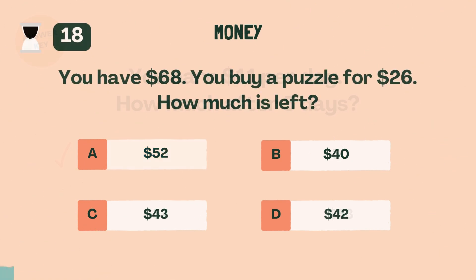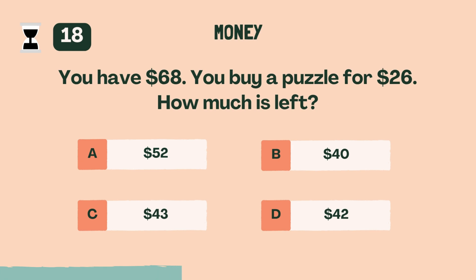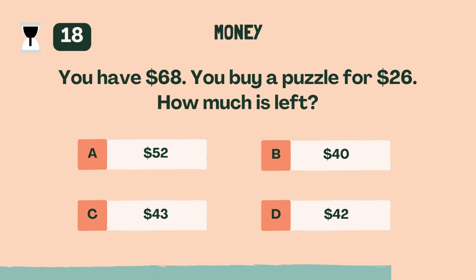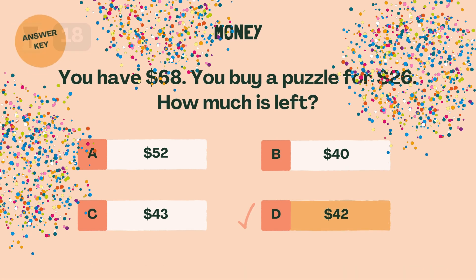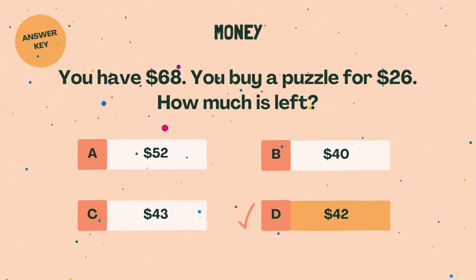You have $68. You buy a puzzle for $26. How much is left? D. $42.